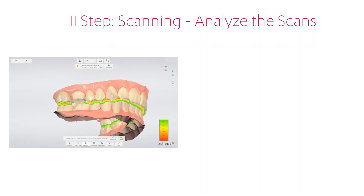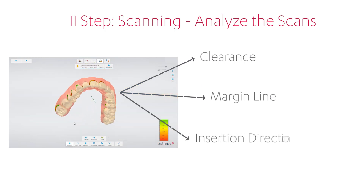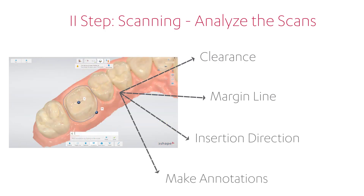In TRIOS software, you can also analyze the scans to make sure that enough information has been collected for the lab, or to decide if any re-scanning or extra preparation is required. You are able to inspect the clearance, the margin line, and the insertion direction. There is also the possibility to make annotations on the scan to help communicate with the lab.